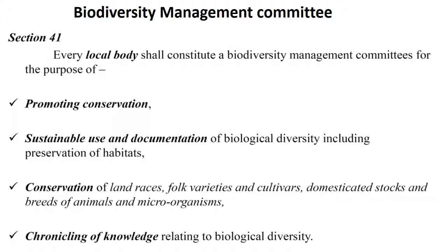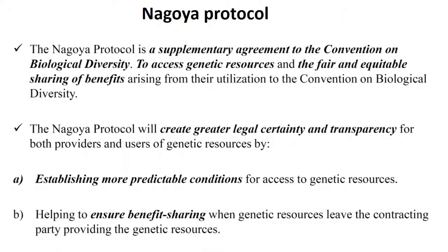The Nagoya Protocol is a supplementary agreement to the Convention on Biological Diversity on access to genetic resources and fair and equitable sharing of benefits arising from their utilization. This protocol creates greater legal certainty and transparency for both providers and users of genetic resources by establishing more predictable conditions for access to genetic resources and helping to ensure benefit sharing when genetic resources leave the contracting party providing those resources.